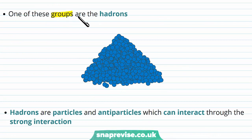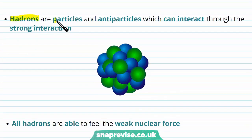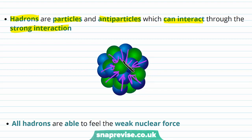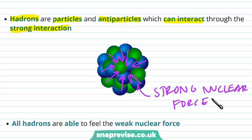One of these groups are the hadrons — these blue particles here are the hadrons. Hadrons are particles and antiparticles which can interact through the strong interaction, which is the same as the strong nuclear force. We know that the strong nuclear force is acting within the nucleus of an atom, and since the particles in the nucleus interact through the strong interaction, we can call these particles hadrons.